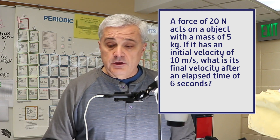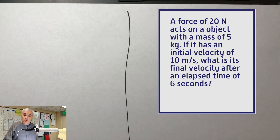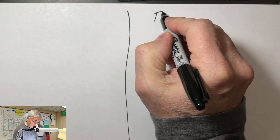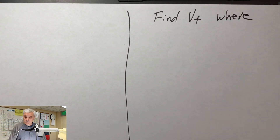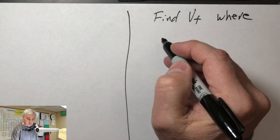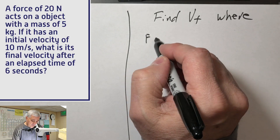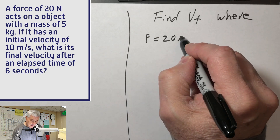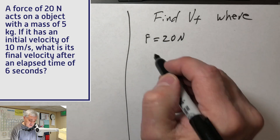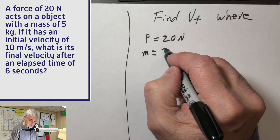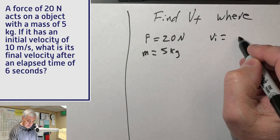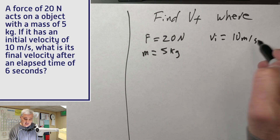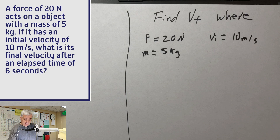We're going to divide the page in two parts. The ultimate question is: what is the final velocity? So we are finding v sub f. We'll list all the variables: F equals 20 newtons, m equals 5 kilograms, initial velocity v sub i equals 10 meters per second, and time equals 6 seconds.